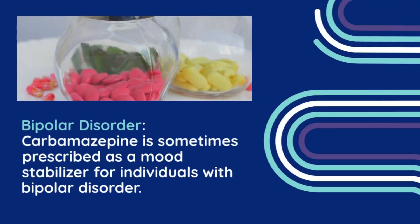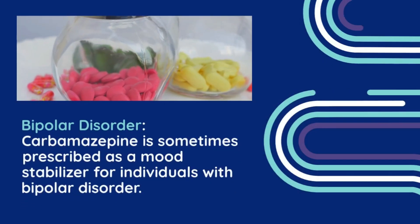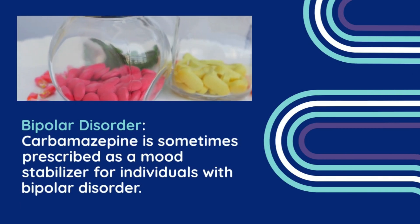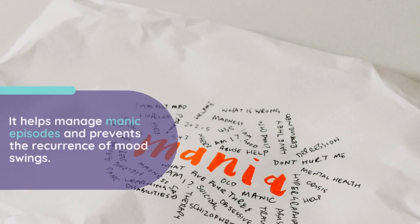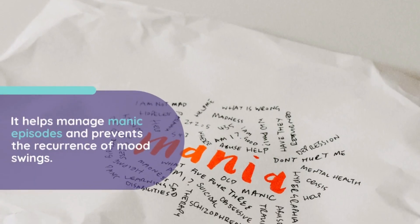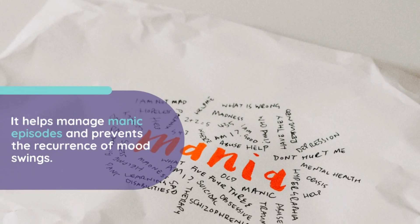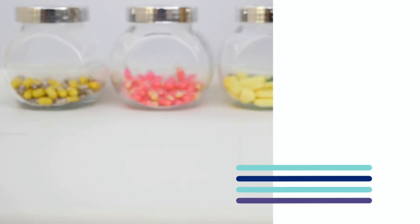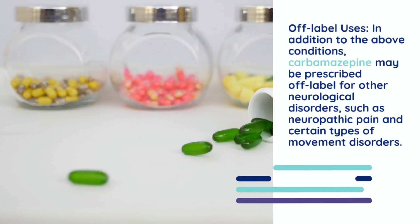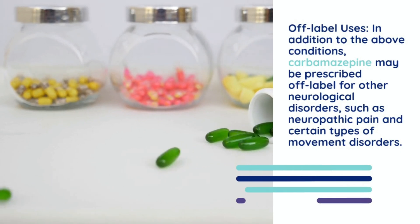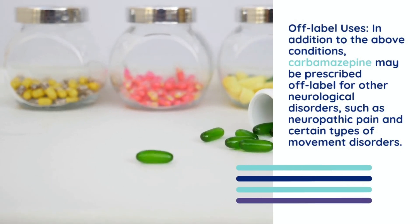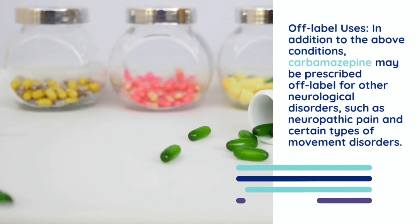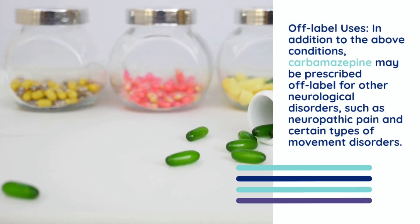Carbamazepine is sometimes prescribed as a mood stabilizer for individuals with bipolar disorder. It helps manage manic episodes and prevents the recurrence of mood swings. In addition, carbamazepine may be prescribed off-label for other neurological disorders, such as neuropathic pain and certain types of movement disorders.